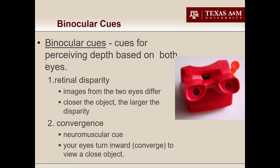The two binocular cues are retinal disparity and convergence. To demonstrate retinal disparity, hold your finger up in front of your face, close your left eye, and cover up something on the screen. Now switch eyes, keeping your finger in place. Switch back and forth — you can see that the retinal image for each eye is slightly different. When you have both eyes open, that slight difference — disparity — in the two images is what your brain uses to compute depth.